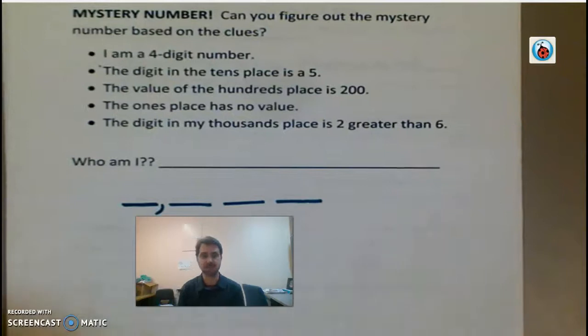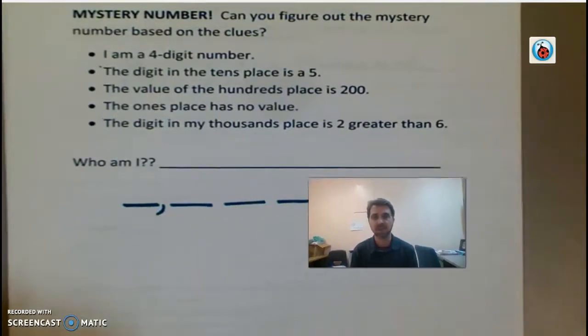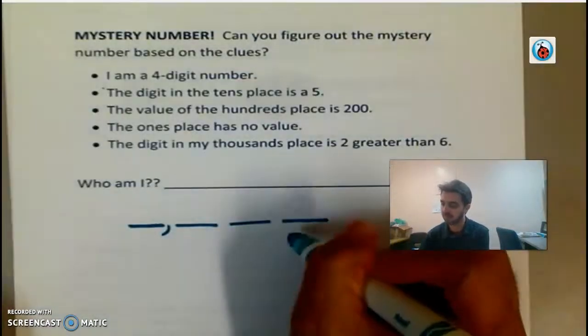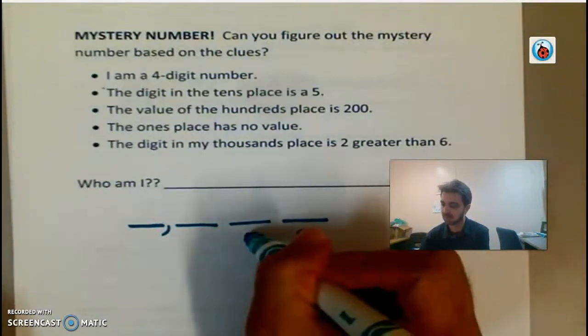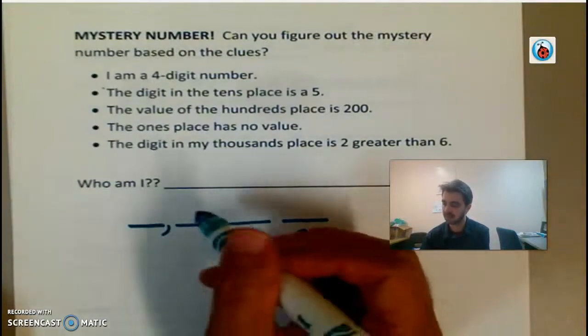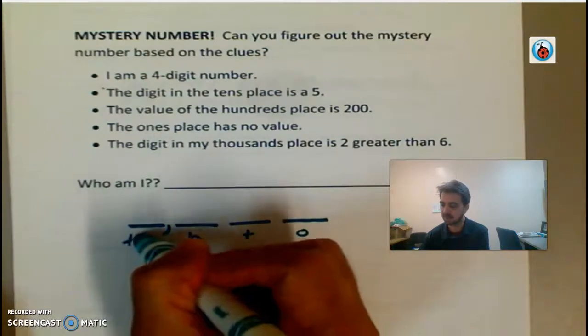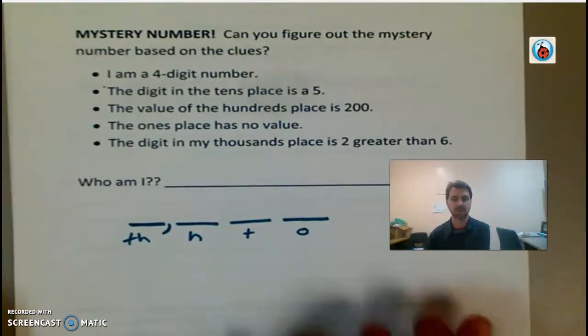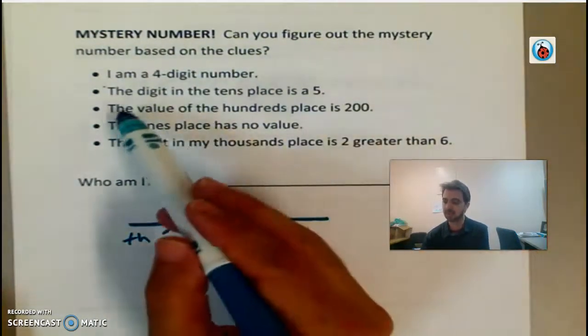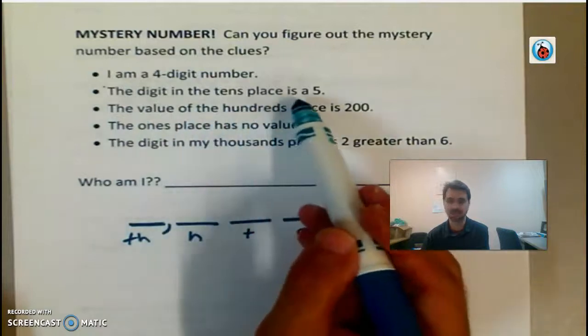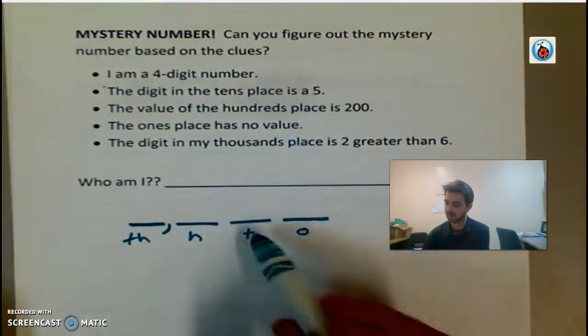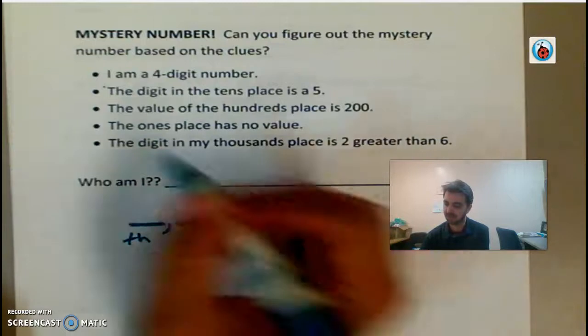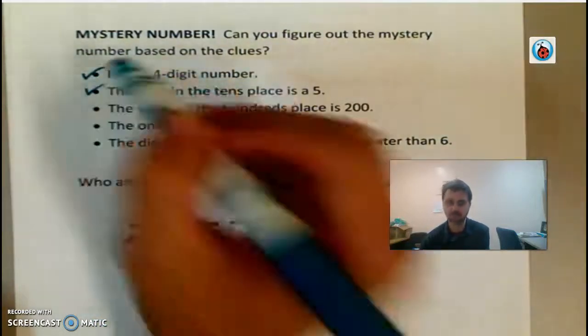If it helps you, let me move me out of the way here. If it helps you, you could even put, right, ones, tens, hundreds, thousands. Okay, so then I go to my next clue, which is the digit in the tens place is five. So here's my tens place. I'm going to put a five. So I've done those two clues.